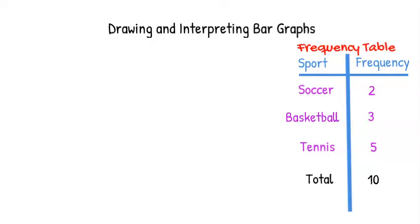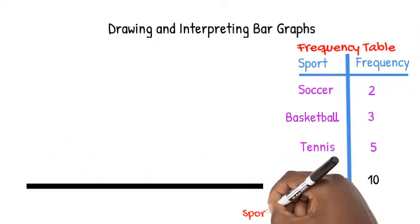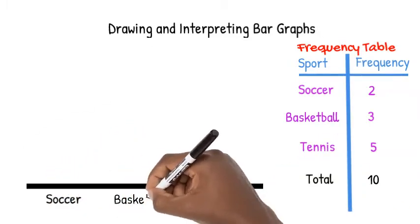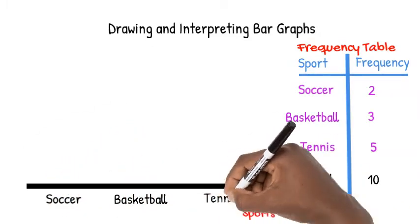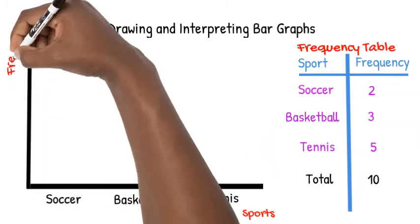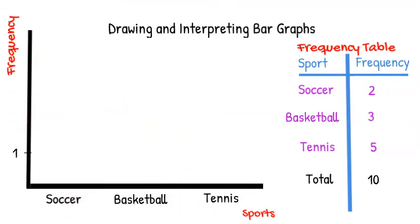The information from a frequency table is needed to make a bar graph. On the x-axis, we place each category: soccer, basketball, and tennis. On the y-axis, we place values that represent frequencies.